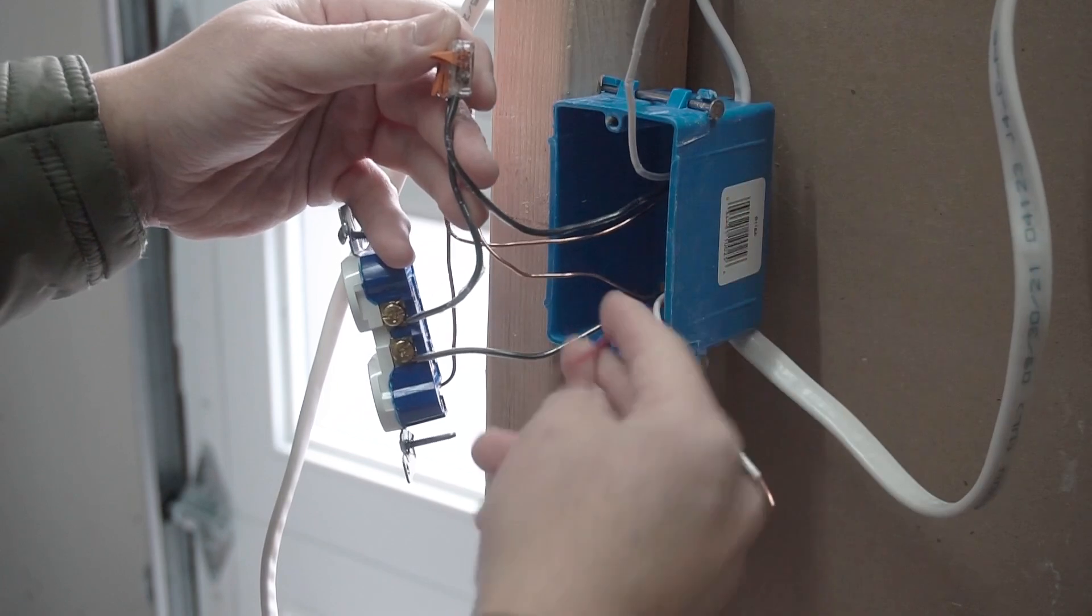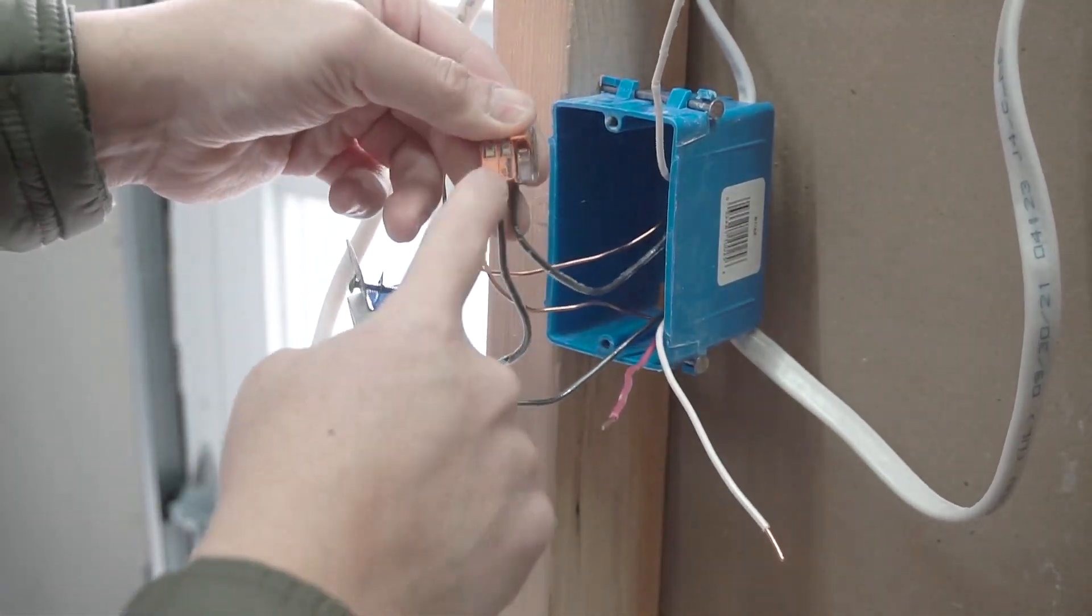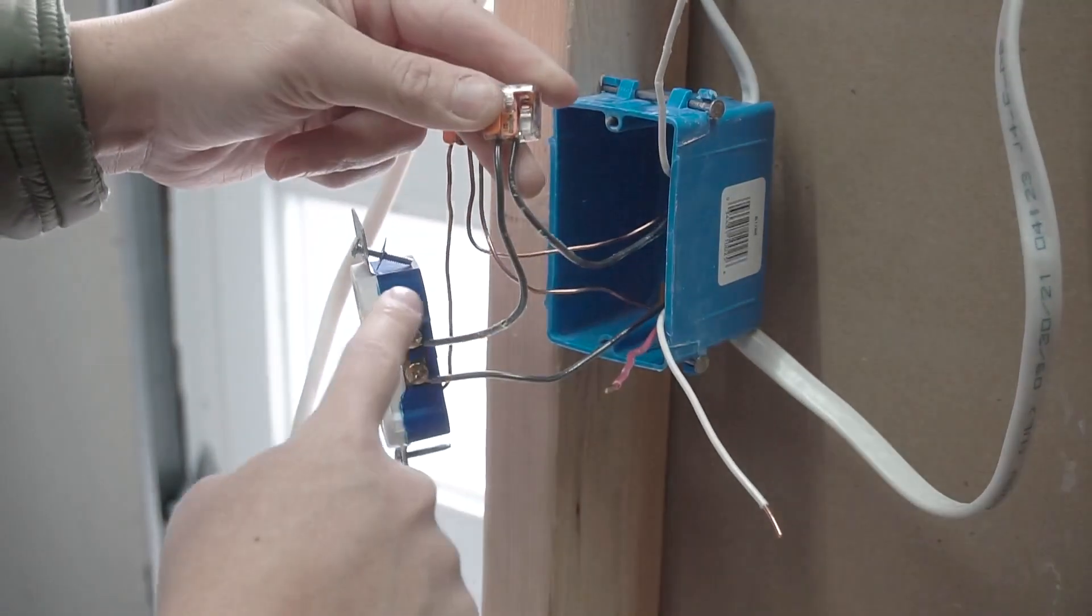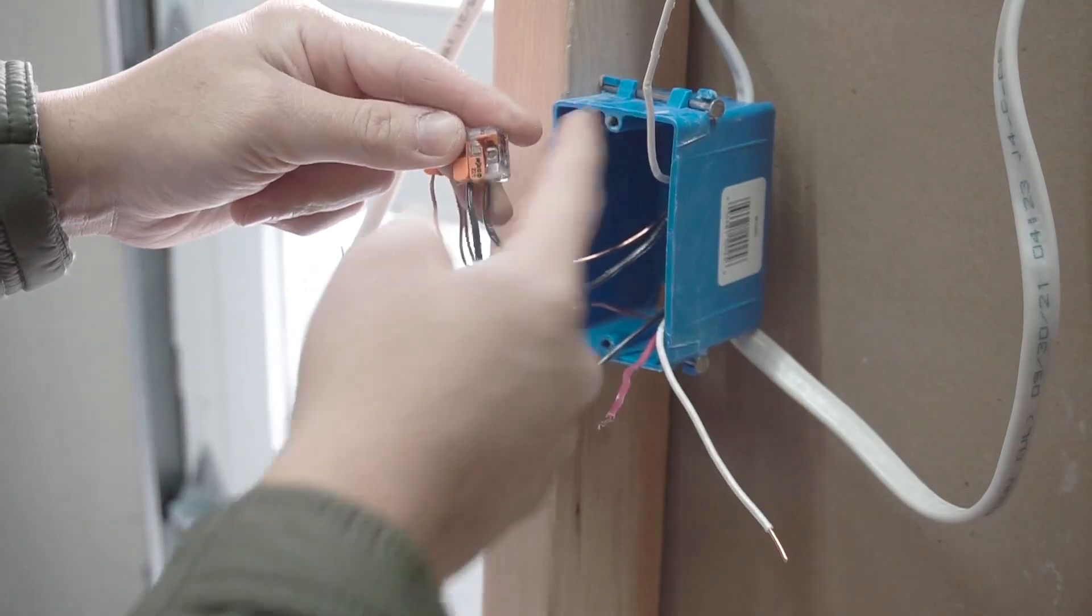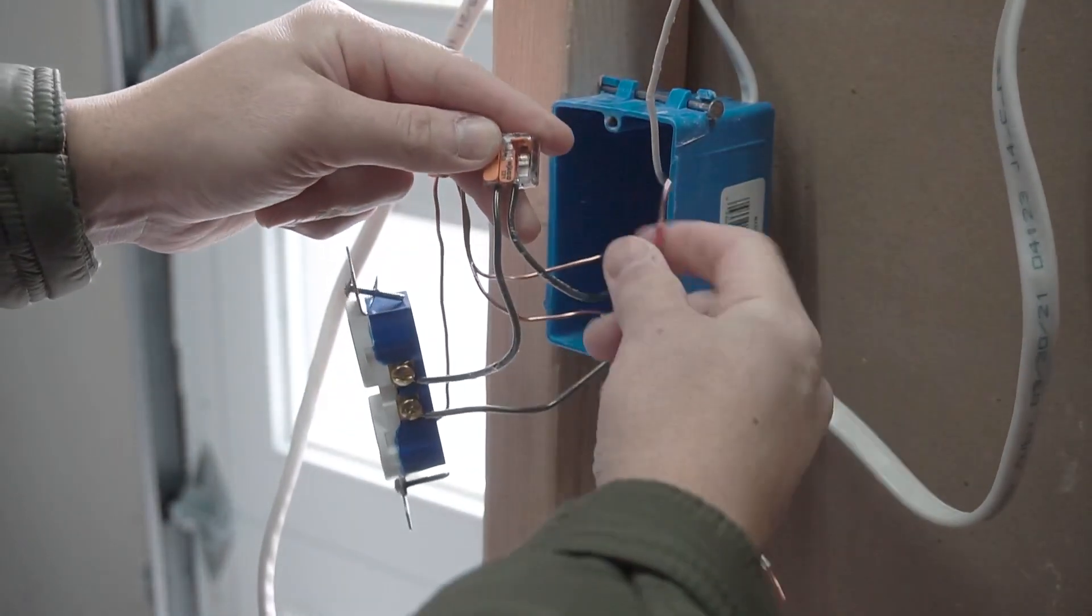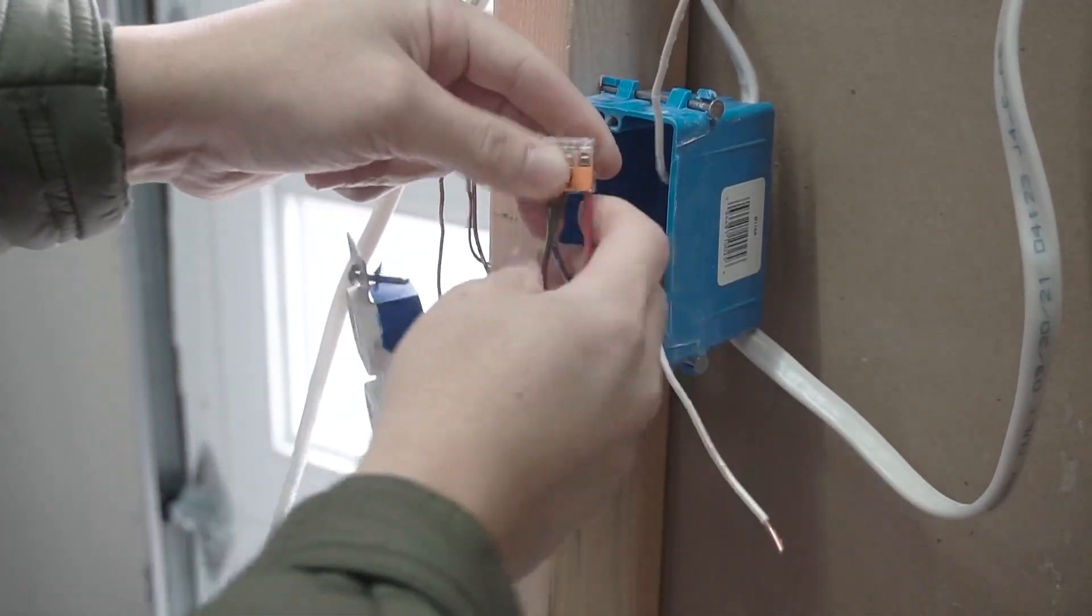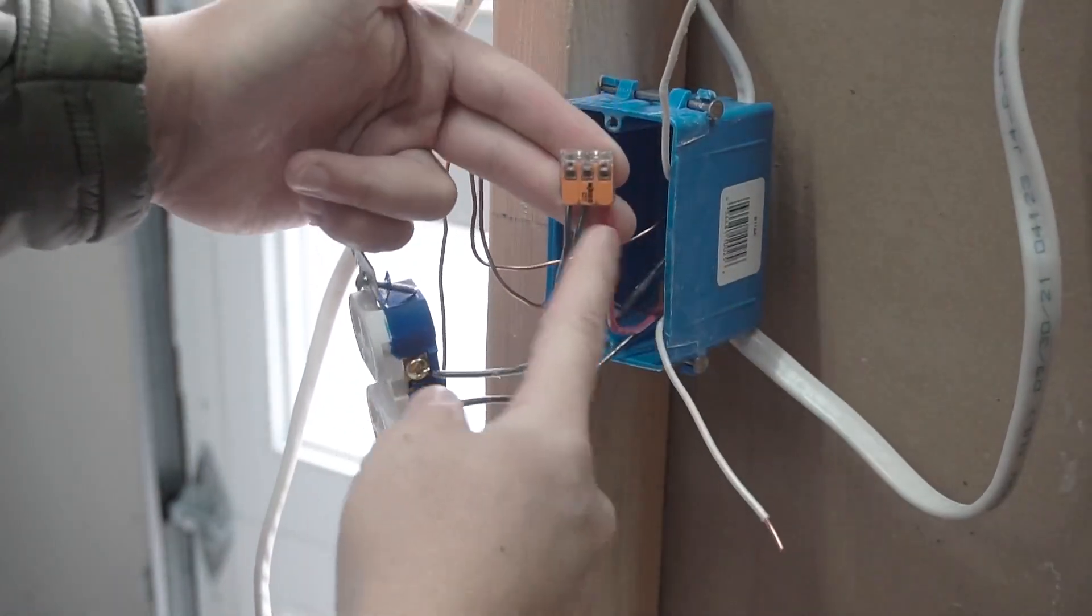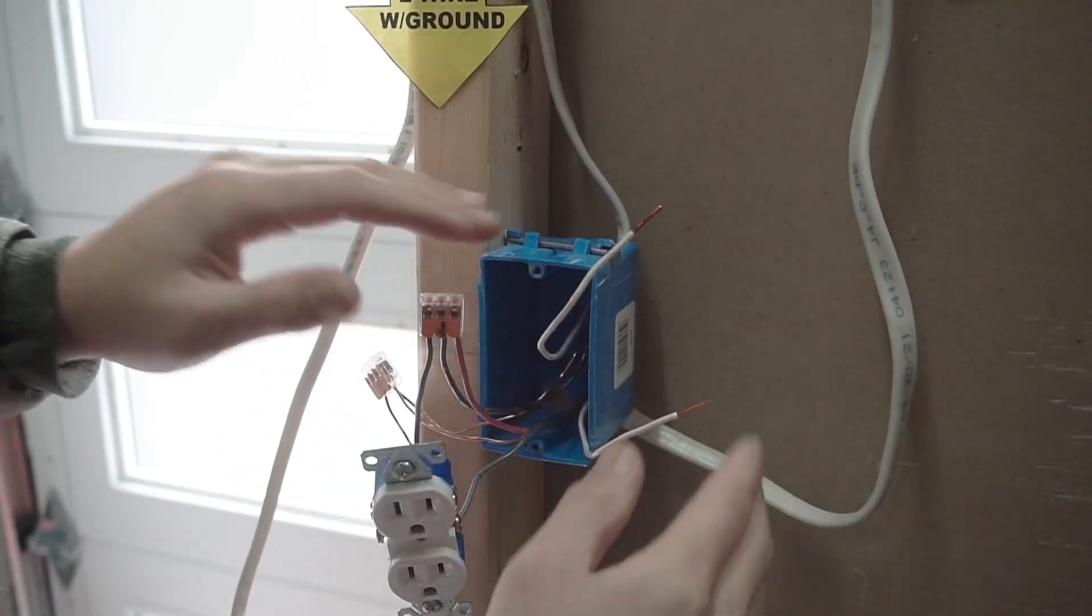Don't get weirded on this. We're going to take the red from the 14-3 and we're going to feed it with the hot wires on the Wago connectors. Now this is from the pigtail from the outlet, the hot from the 14-2 power source, and we're going to put this 14-3 red in there with it. So now you have two blacks, one red onto this wire connector.